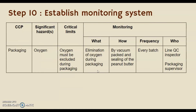The last CCP is packaging. The significant hazard found is oxygen. The critical limit is that oxygen must be eliminated during packaging. For monitoring, the objective is to eliminate oxygen during packaging by vacuum packing and sealing of the peanut butter for every batch. This monitoring system will be assessed by the line inspector and packaging supervisor.